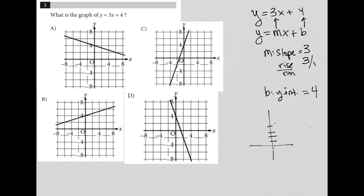So I'm looking for a graph that has a y-intercept of 4: 1, 2, 3, 4. And then from there goes up 3. So 1, 2, 3, which makes it at 7, over 1. So it'll be right there. So my graph should look something like that.